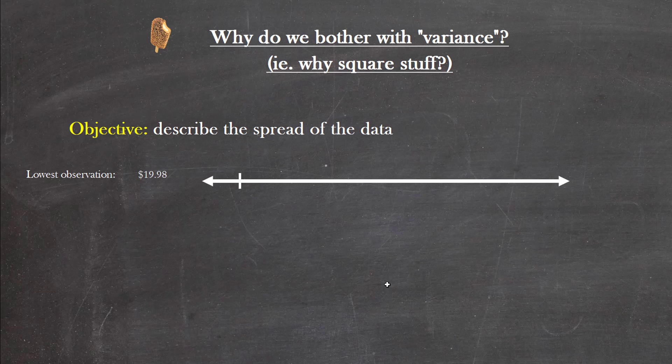Here's a number line. Let's say the lowest observation is $19.98 and the highest observation is $105.51. You can calculate the range as the highest observation minus the lowest observation, and that gives you some kind of sense of the spread of the data. But it's not a very statistically advanced measure of the spread, is it? It's also very susceptible to outliers - if you just had one freakishly large number, this range would be a huge number purely because of that single observation.